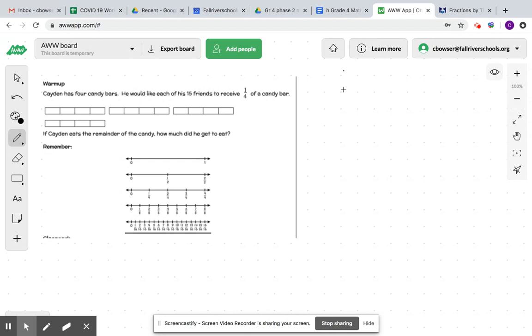So it says, Caden has four candy bars. He would like each of his 15 friends to receive one-fourth of a candy bar. And if you look at the image, you can see there's four candy bars and they're split into one, two, three, four parts.